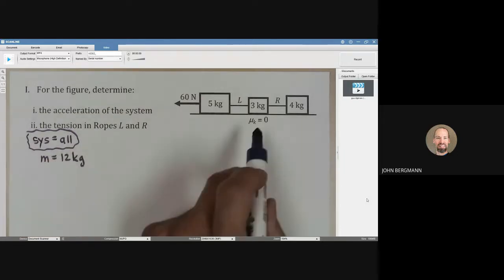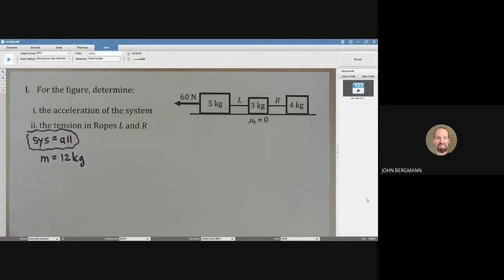5 plus 3 plus 4. And the net force, there's no friction. The weight and the normal force of every bit of this cancels. So the net force is 60 newtons. And the net force is what? It's the mass times the acceleration.